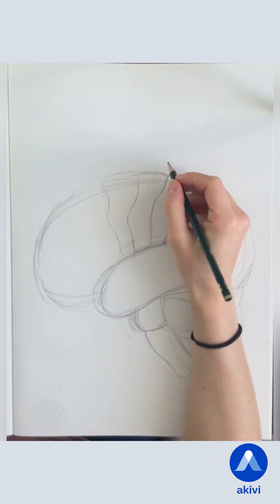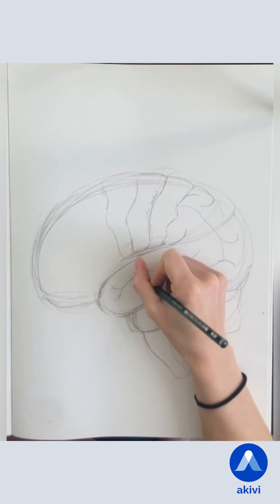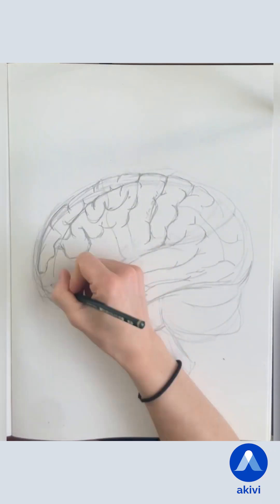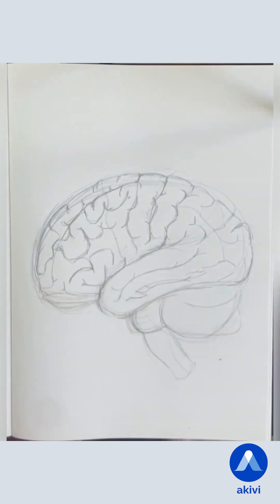The human brain is special in that it presents a lot of gyri. They're the relief that you can see on the surface of the cortex. They're separated via invaginations called sulci and allow for an increased surface area.